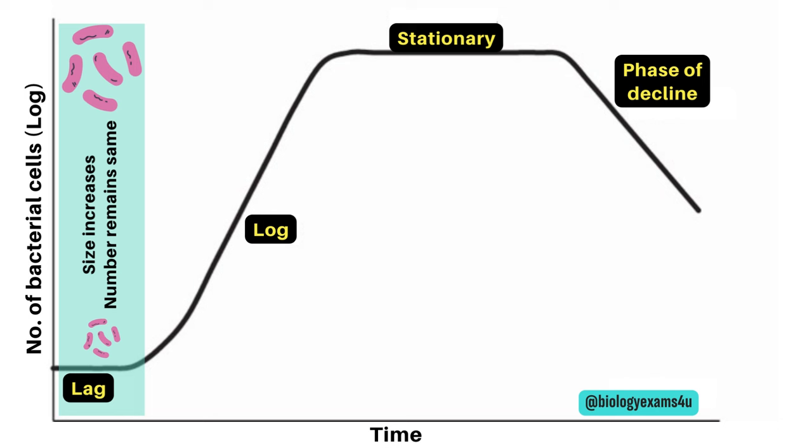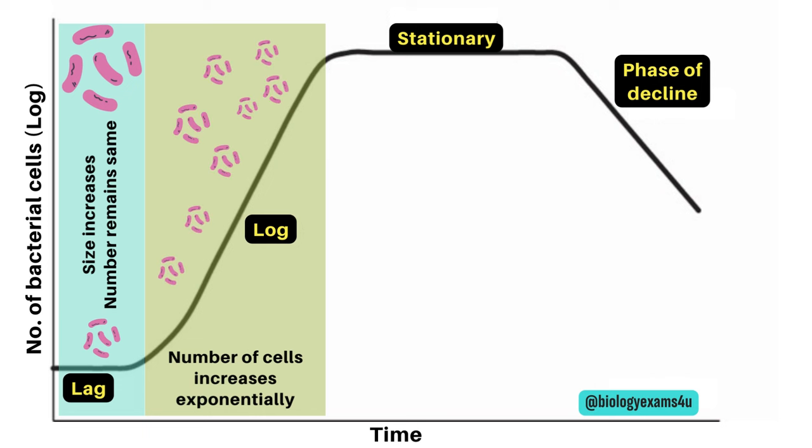Second phase is the log phase or the exponential phase. In this phase, bacterial cells start dividing and their number increases with time exponentially. In this phase, cells are smaller and stained uniformly. Bacteria are more susceptible to antibiotics during log phase.